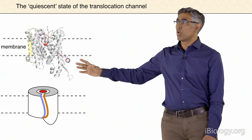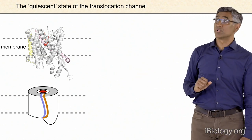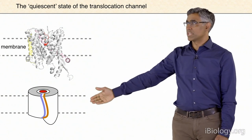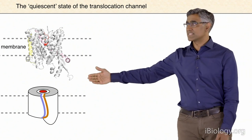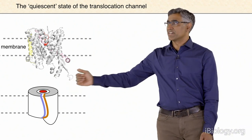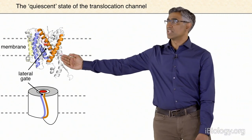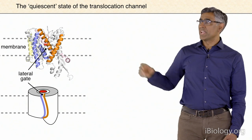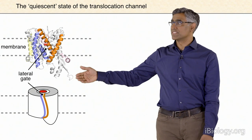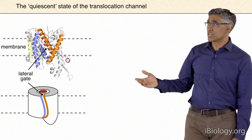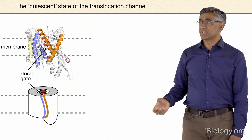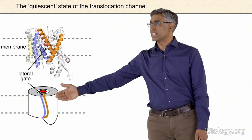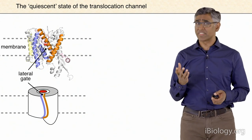Comparing these three states, a simplified way to think about SEC61 is as a cylinder that has a seam in the middle, forming a lateral gate. The helices that form this seam are the lateral gate. The idea is that this seam might part in order to allow proteins to enter the lipid bilayer. In addition, in the center of this channel is a plug—when nothing is happening, the channel should be closed. There's a plug keeping the channel closed and a seam that might open to allow proteins to enter the lipid bilayer.